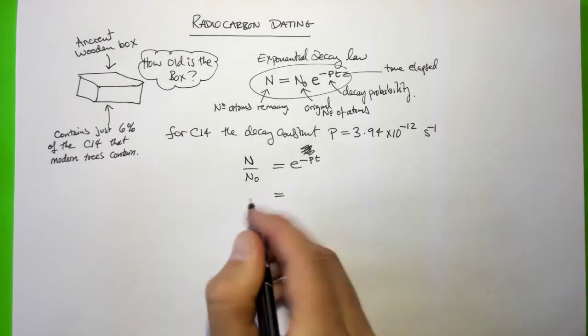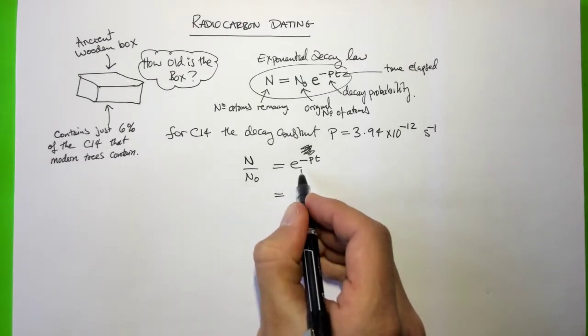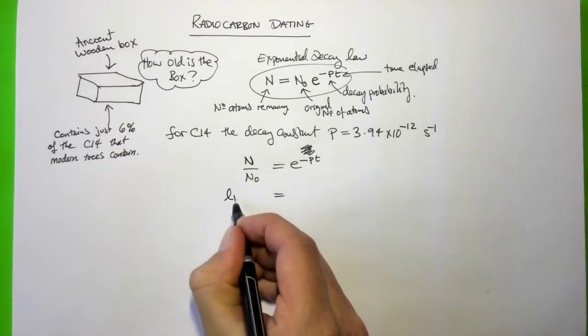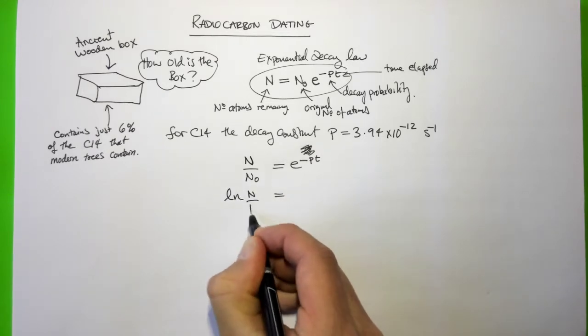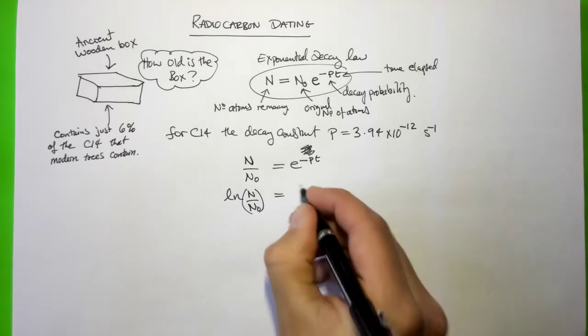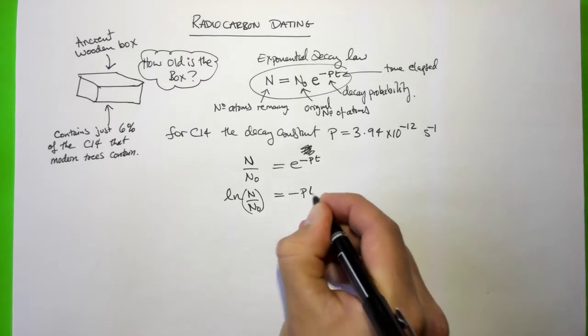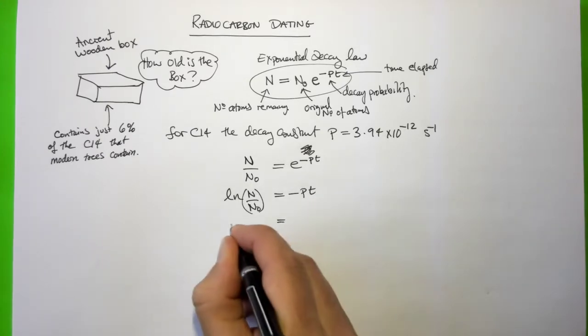Now we can take logs of both sides. So this is e, the exponential function. So we're going to take the natural log, ln, of n over n0 equals minus Pt.